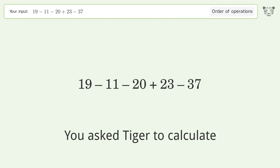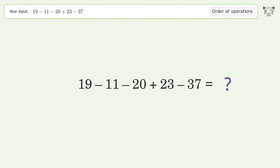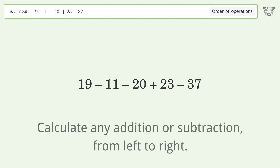You asked Tiger to calculate this. It deals with the order of operations. The final result is negative 26. Let's solve it step by step.